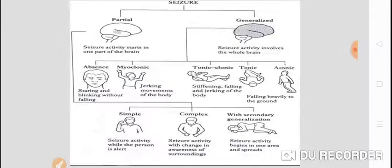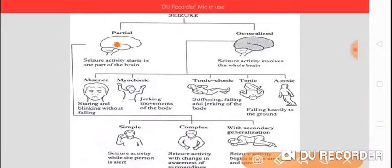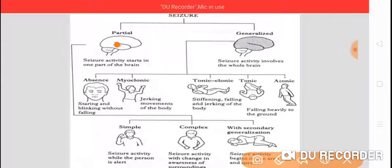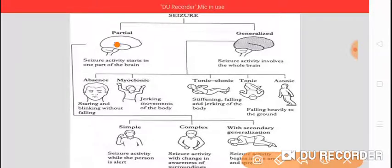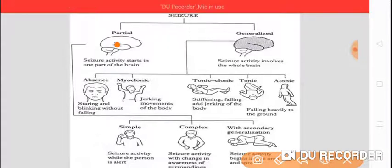Here we can see what is meant by partial seizures and generalized seizures. When seizure activity starts in one part of the brain, it is called a partial seizure, localized seizure, or focal seizure. The seizure activity is limited to one lobe — temporal, occipital, frontal, or parietal — or any particular cerebral hemisphere, right or left. So we call it partial epilepsy or partial seizure.